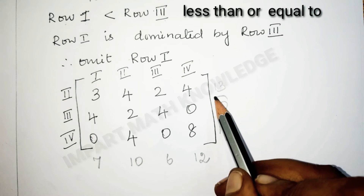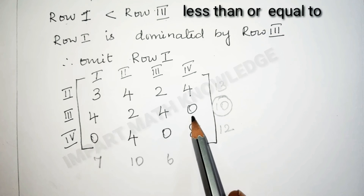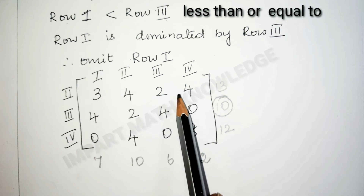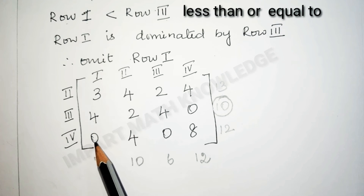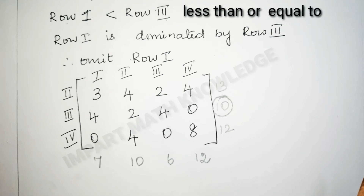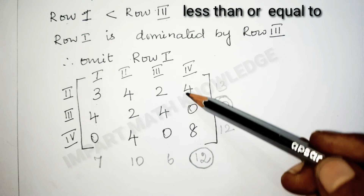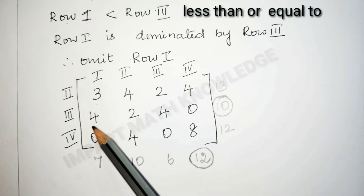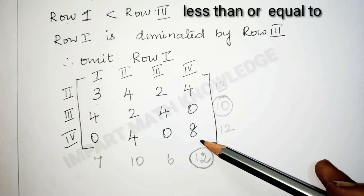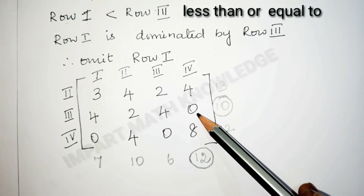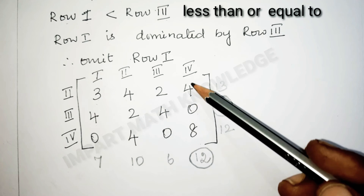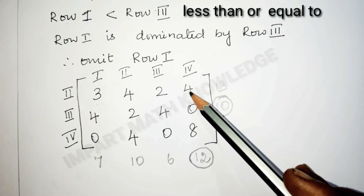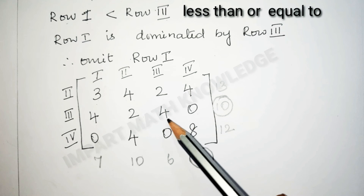From the row total, the minimum is 10. Compare the third row with the other rows: 4 is greater than 3, so no dominance; 4 is greater than 0, so no dominance. So we go to column reduction. In the column, select the maximum value, which is 12. Compare the 4th column: 4 is greater than 3 but 0 is less than 4 — no dominance. Compare 4th column with 2nd column: 4 equals 4, but 0 is less than 2 — no dominance. Compare 4th column with 3rd column: 4 is greater than 2, but 0 is greater than 4 — no dominance.